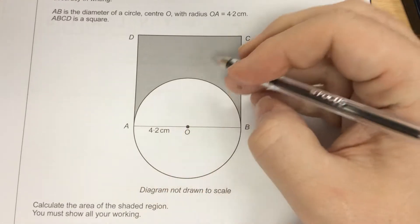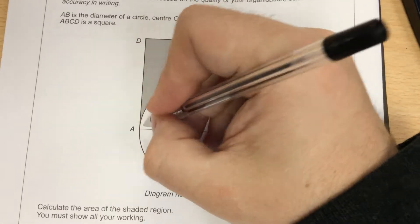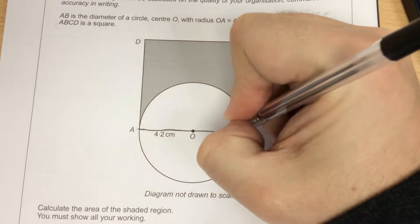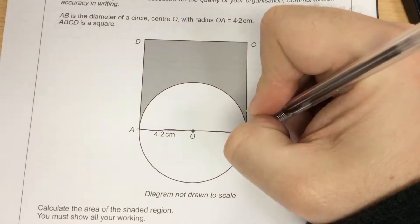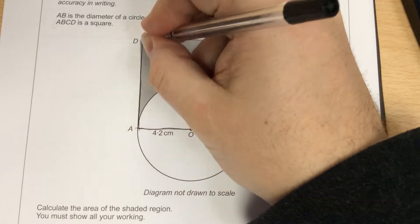Calculate the area of the shaded region. If you look at the shaded region, what I have is a square. So this is a square.